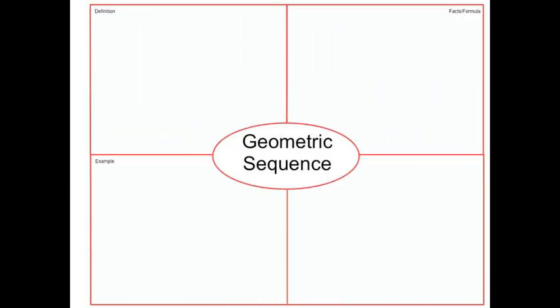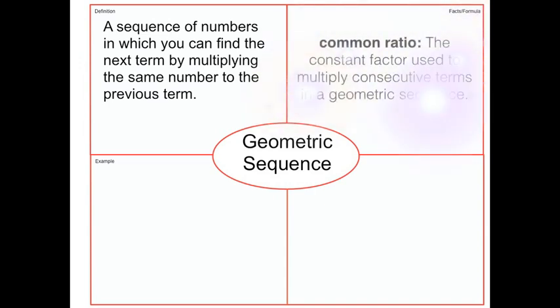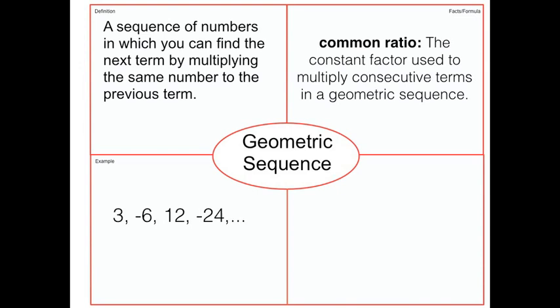This brings us to our other type of sequence, geometric sequence. This is the common ratio between two terms. So what you have to multiply by to get from one term to the next. Here are two examples that show geometric sequence. The first one you have to multiply by negative two, that's the common ratio, to get from one term to the next. And the second example you have to multiply by one-half.